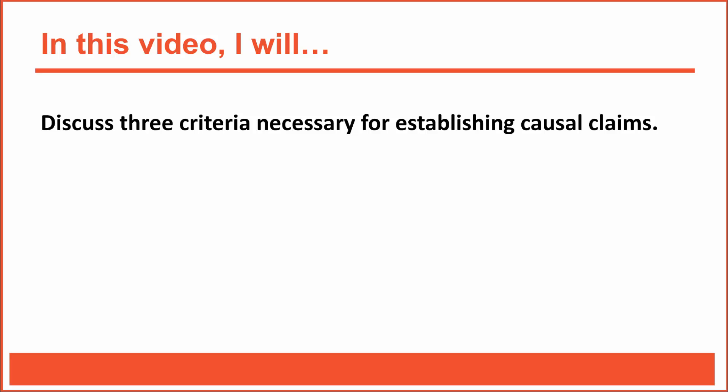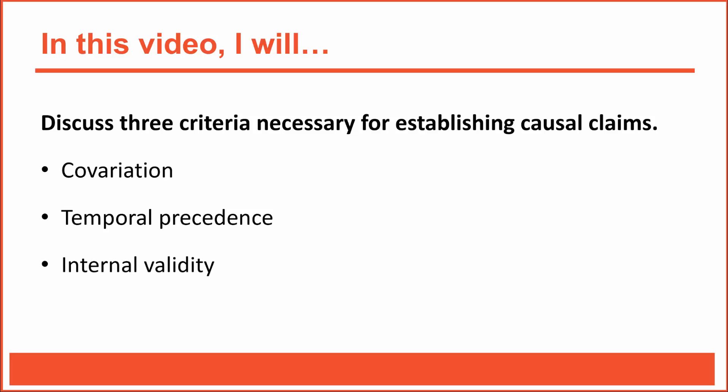It's relatively easy to establish an association between two variables, but it's more complicated to establish a causal relationship. Correlation does not imply causation, because causal claims require more than just co-variation. To support a causal claim, researchers must conduct a well-controlled experiment that establishes temporal precedence and internal validity. Without those three criteria, a study cannot provide sufficient evidence of a causal relationship. In this video, I'll discuss those three critically important criteria with an example.